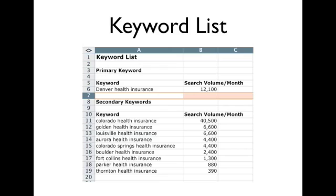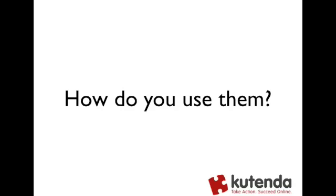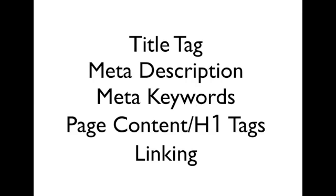You can see in the keyword list here we have our primary keyword, and then below that we have secondary keywords. In this case, it would be a health insurance agent in the Denver area who also works in other areas of Colorado. Looking down the list, Golden, Louisville, Aurora — those are all cities within the Denver metro area. We also have some of the major cities that outlie the Denver metro area. This is our example keyword list. The big question is, how do you use these keywords once you have a keyword list and you're ready to go — how do you use those to optimize your website?